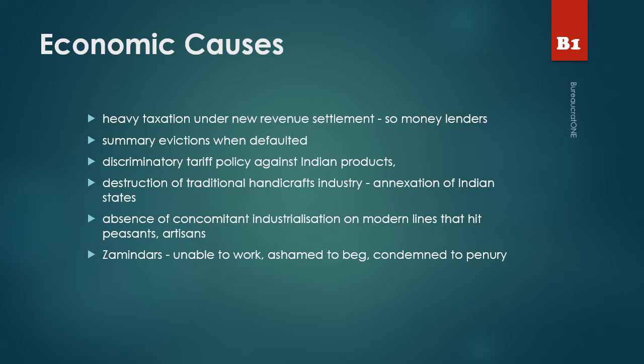With annexation, monarchy was abolished, and artisans who worked for the monarch lost their jobs, which destroyed the handicrafts industry. There was also absence of concomitant industrialization on modern lines, which hit peasants and artisans the most, because neither new jobs were created nor old jobs were preserved. Even zamindars were not immune to the company's economic policy — zamindars lost their zamindari rights when they defaulted. Unable to work, ashamed to beg, and condemned to penury, they perished in their poverty.